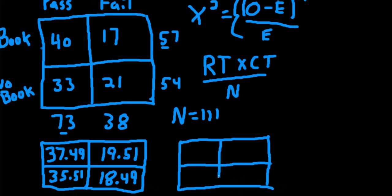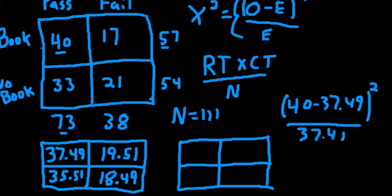So if we take 40 minus 37.49, square it, and then divide it by 37.49. So we're taking 40 minus 37.49, squaring the difference, and then dividing it by 37.49. So that's 40 minus 37.49, squared, and then divide it by 37.49. We get 0.17.